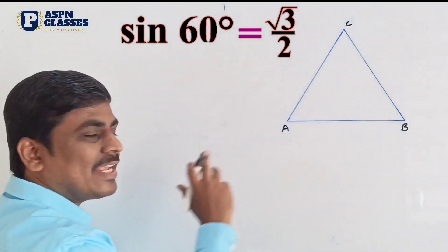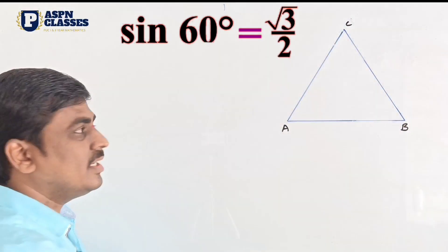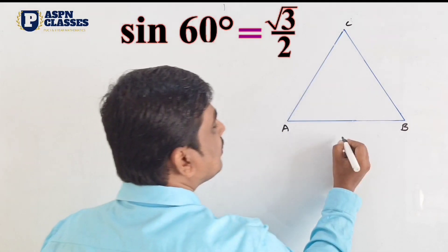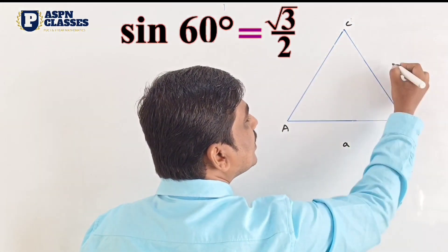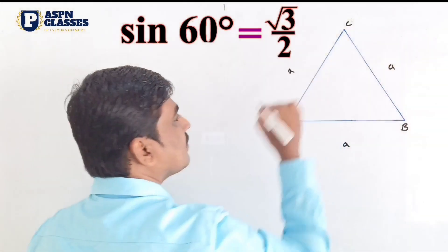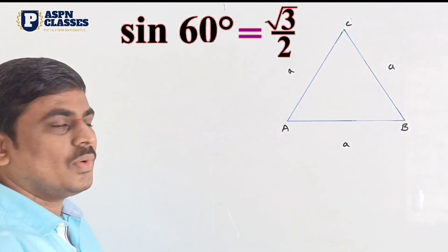In the equilateral triangle, every side is equal — this is a, this is a, and this is a.